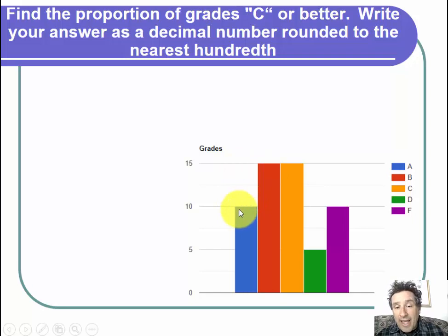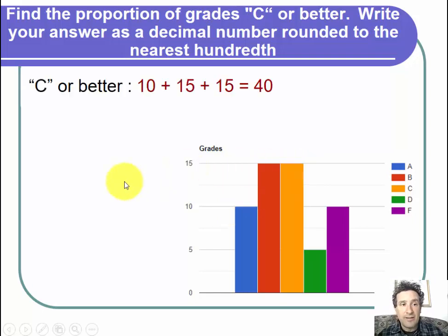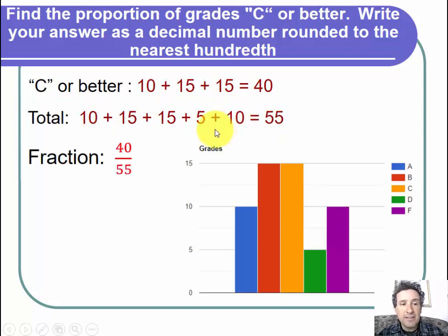C or better are the A's, B's, and C's. So we can count the A's, B's, and C's. There were 10 A's, 15 B's, and 15 C's. 10 plus 15 plus 15 is 40. And we saw before the total was 55. So now the fraction will be 40 over 55.